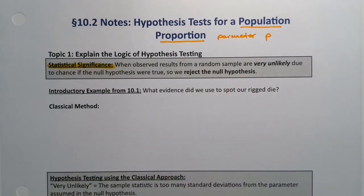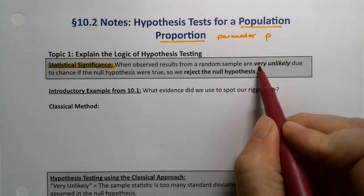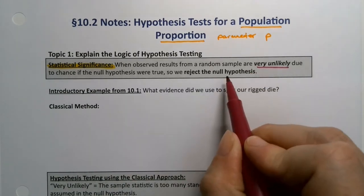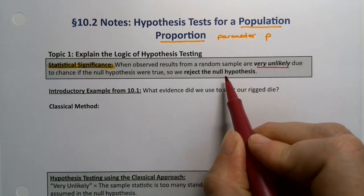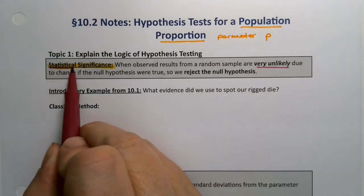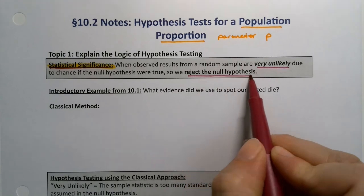In other words, the probability of a fluke, observed results by random chance, was too low, so we reject the null hypothesis. Statistical significance means getting to reject the null hypothesis.